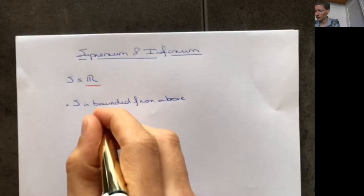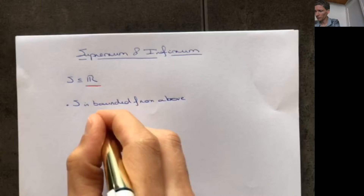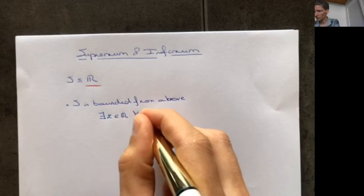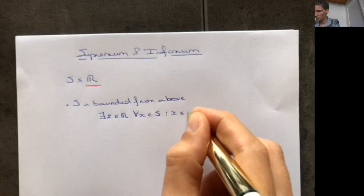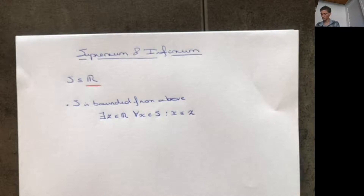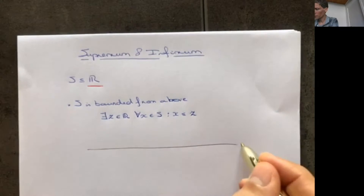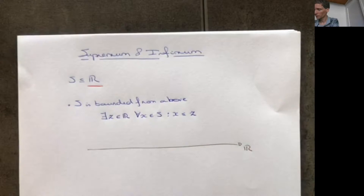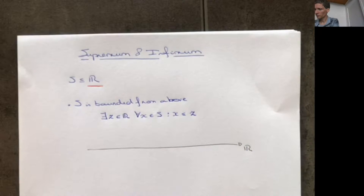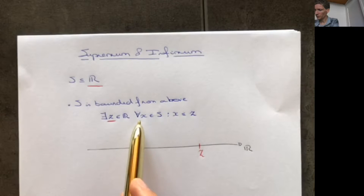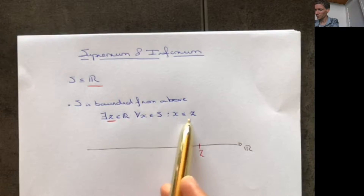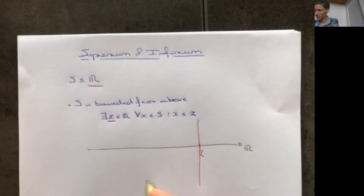S is bounded from above if we can find a number Z in R such that for all elements X in S, X is less than or equal to Z. So if we take the real number line, we have to find a number Z — for example this one here — and we need that for all elements X in S, X is less than or equal to Z. So the set S lies to the left of this Z.